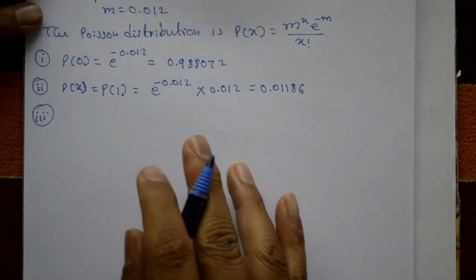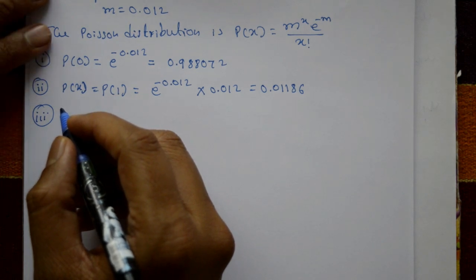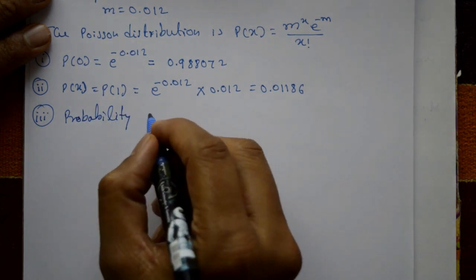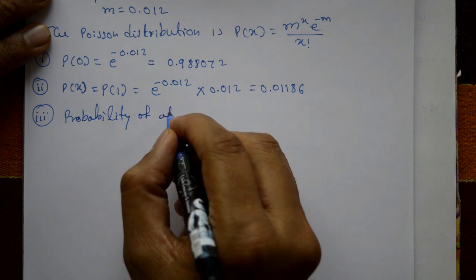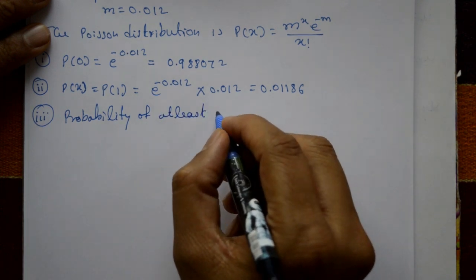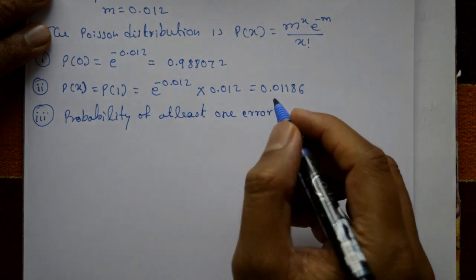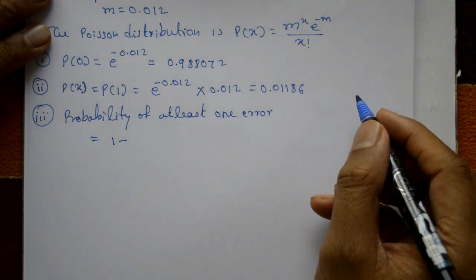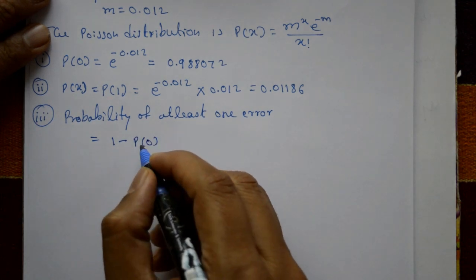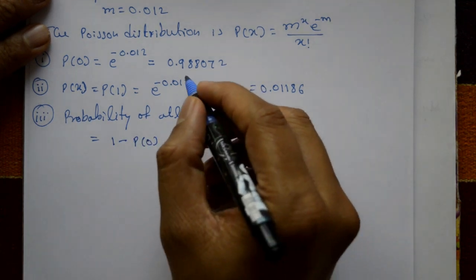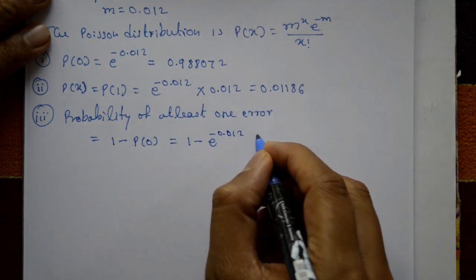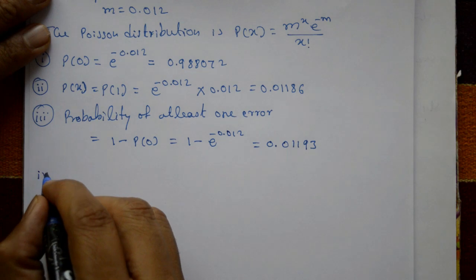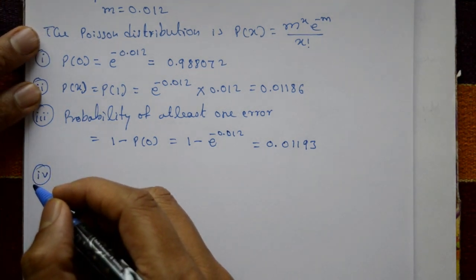Case 3 is at least one error per microsecond. Find the probability of at least one error. At least one means 1, 2, 3, 4 and so on, which equals 1 minus the probability of no error. This equals 1 minus e raised to minus 0.012, which equals 0.0112.